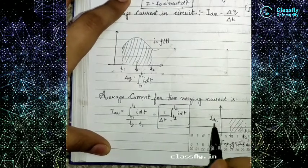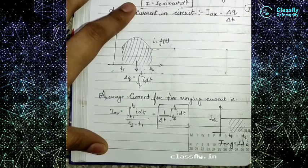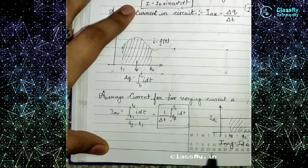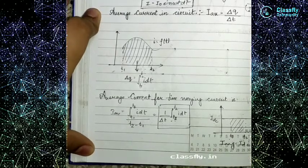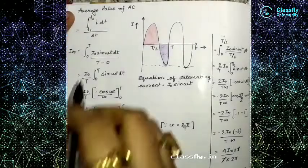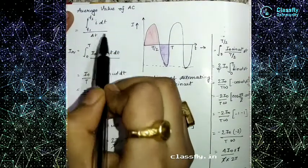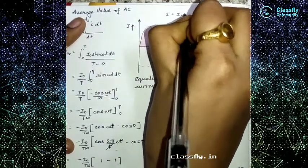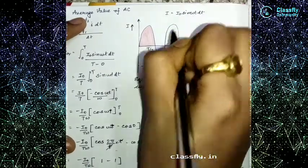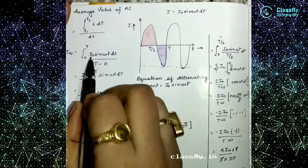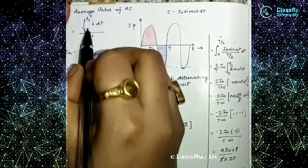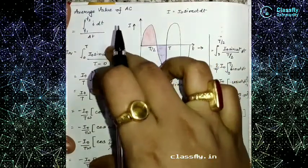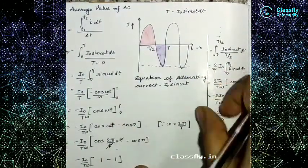In a DC circuit, if there is a straight line, that means it is pure direct current, so I_average always equals I_DC. Now let's move on and derive the mean or average value of AC. We have the integral from t₁ to t₂ of I dt divided by Δt, and we know that I = I₀ sin(ωt). Our t₁ is 0 to T for the full cycle and 0 to T/2 for the half cycle — we are doing both parallelly.